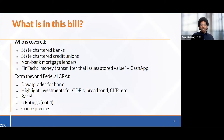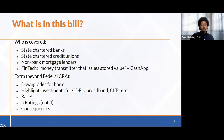This brings us to California, and more specifically to SB 1176, authored by Senator Limon, which would establish the California Community Reinvestment Act. Covered institutions would include state-chartered banks, state-chartered credit unions, non-bank mortgage lenders, and fintech or financial technology companies — money transmitters that issue some kind of stored value. SB 1176 goes beyond the federal CRA with downgrades for harm, highlights for investments in CDFIs, broadband infrastructure, and community land trusts, and an explicit consideration of race.